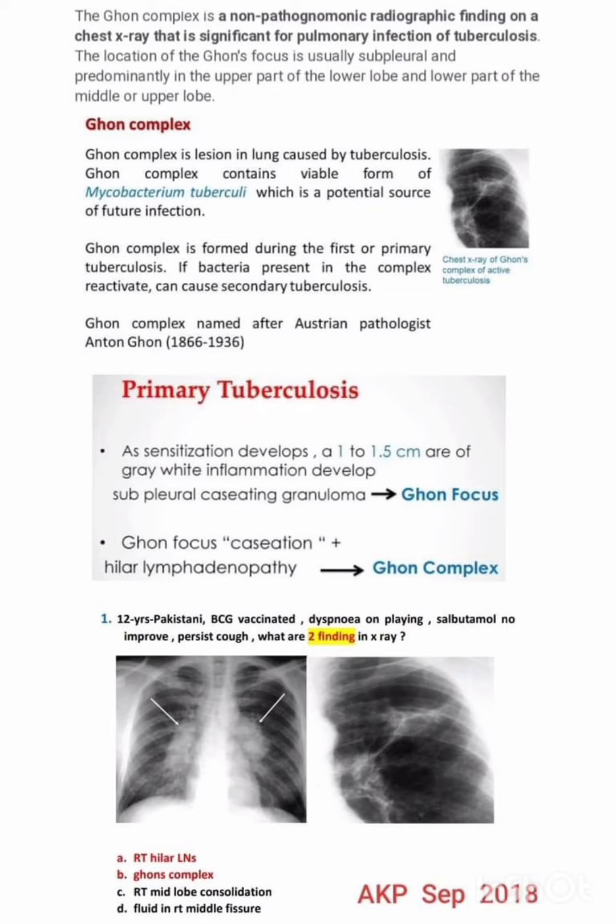There is a question from a past paper exam: a 12-year-old Pakistani BCG-vaccinated child presents with dyspnea on playing. Salbutamol does not improve symptoms, and there is a persistent cough. What are the two findings on x-ray? If we examine the x-ray, we find right hilar lymph nodes and the Ghon complex.